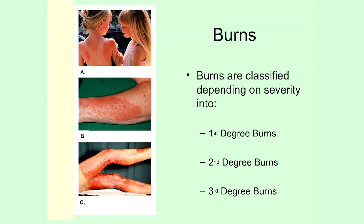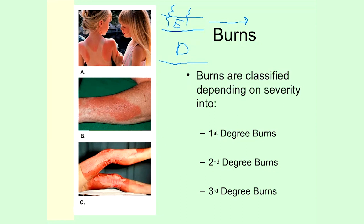I'm going to draw a picture to explain why blisters form with a second degree burn. Here's my simplified representation of the upper layer of skin — the epidermis — and the lower layer, the dermis. With a first degree burn, damage only reaches into the epidermis. With a second degree burn, damage has penetrated through the epidermis and is now down in the dermis.